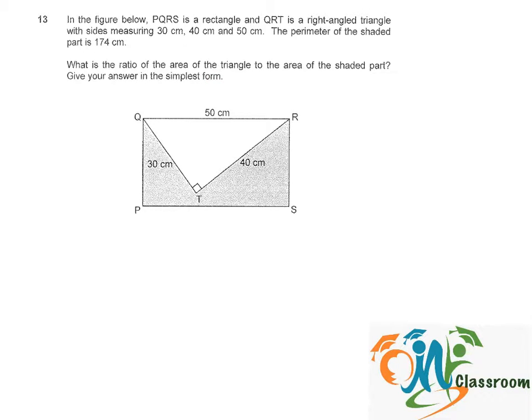We will approach this question using the perimeter of the shaded part, which is 174cm. If we go one round around the shaded area, it will be the breadth of the rectangle plus 30 plus 40 plus the breadth plus the length which is 50.